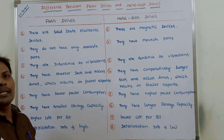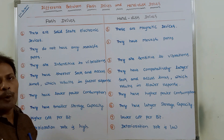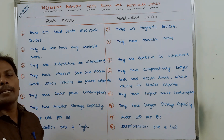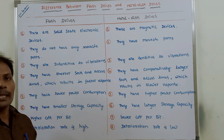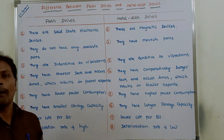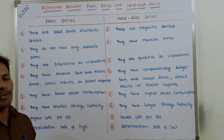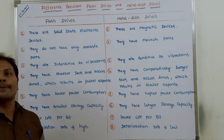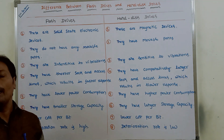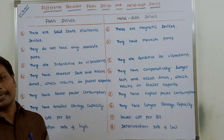Welcome back to our YouTube channel. Today we have to discuss the difference between flash drives and hard disk drives in operating system, computer architecture, computer organization, and computer organization and architecture courses. Generally, there are two types of drives available: the first one is flash drive, and the second one is hard disk drive.